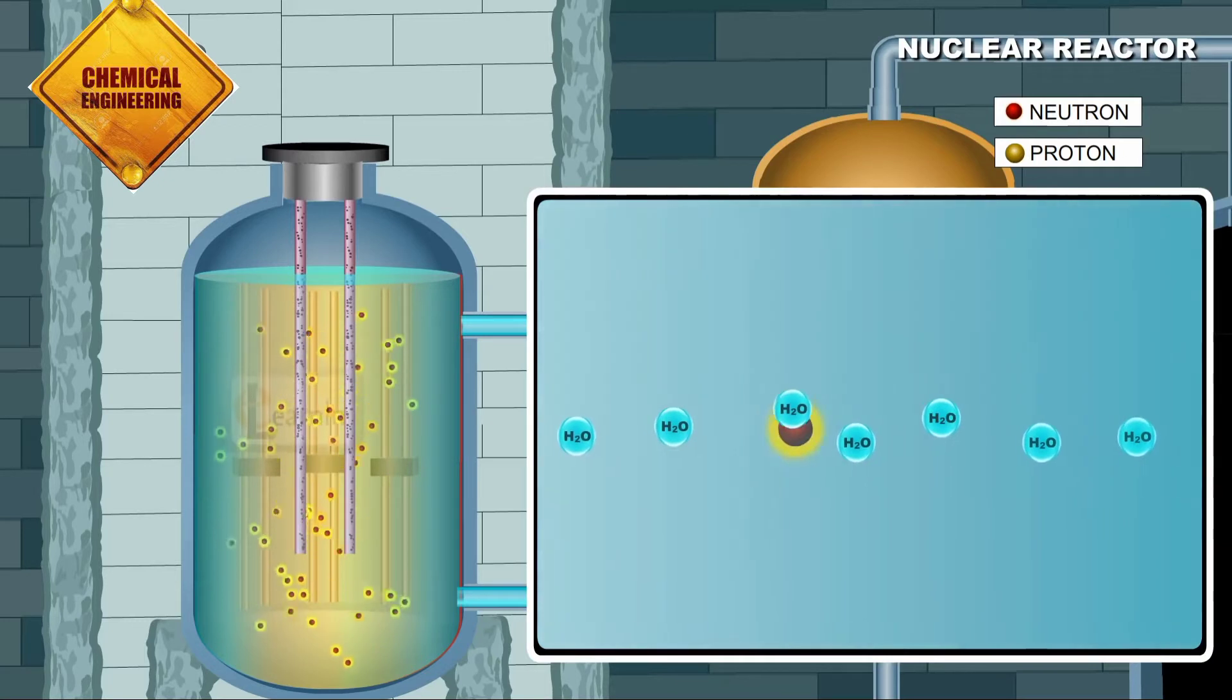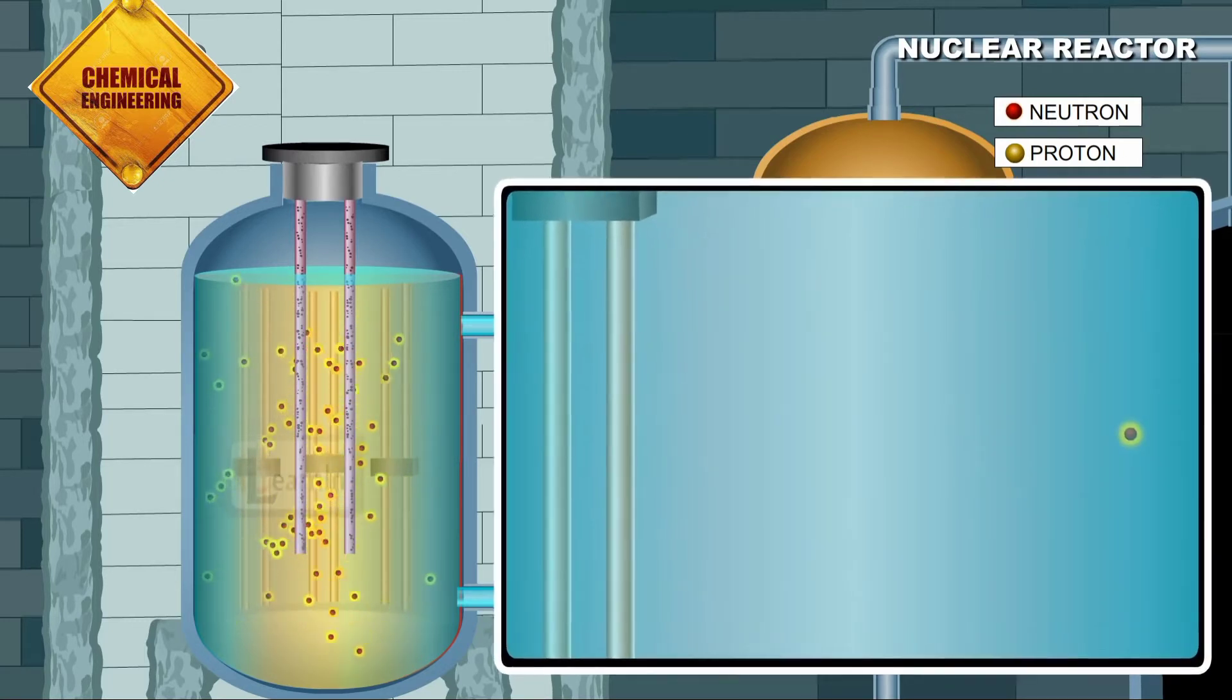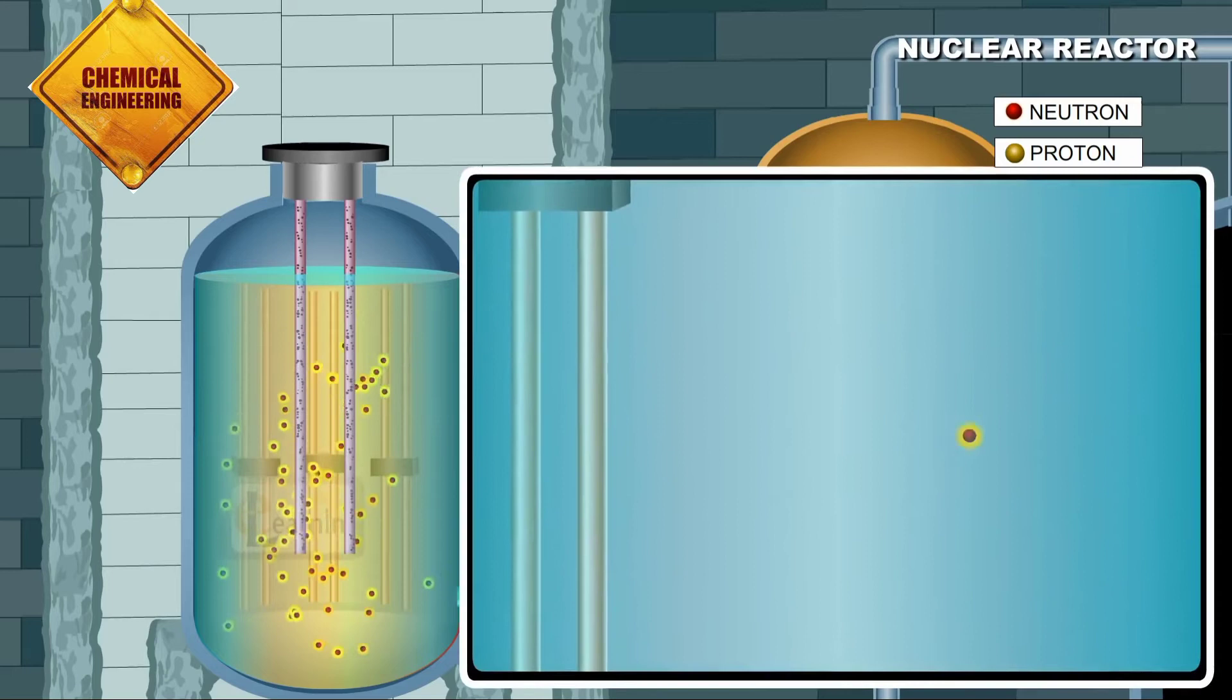A new fission reaction can now be triggered using this slow neutron by striking it with the fuel element.